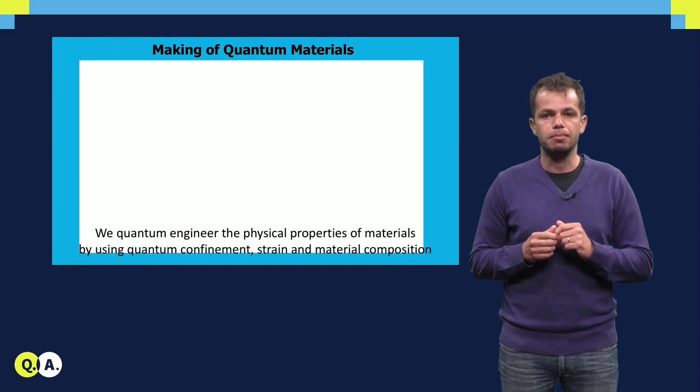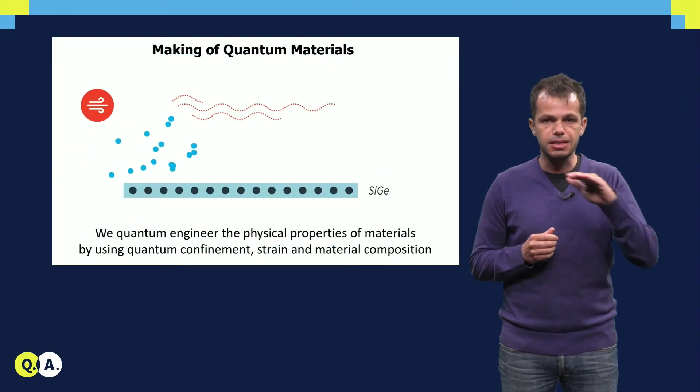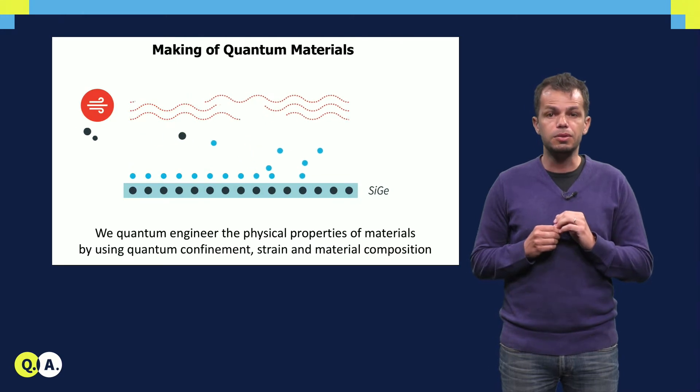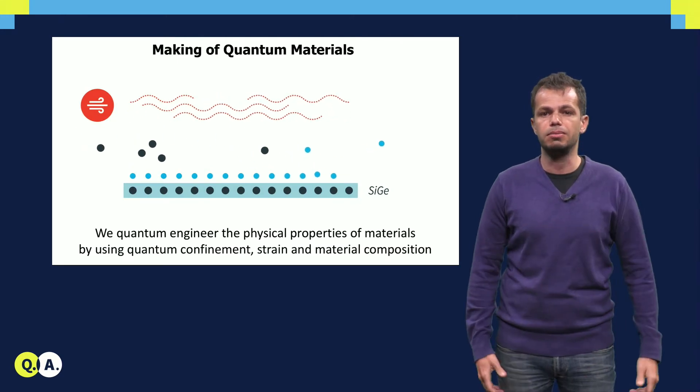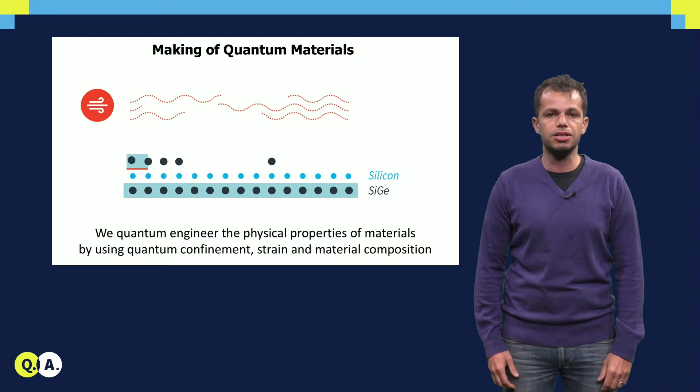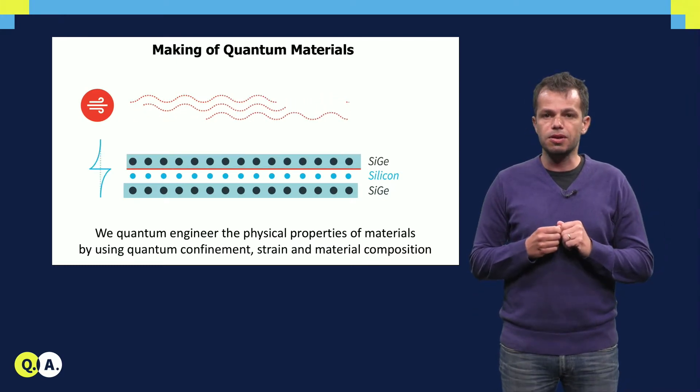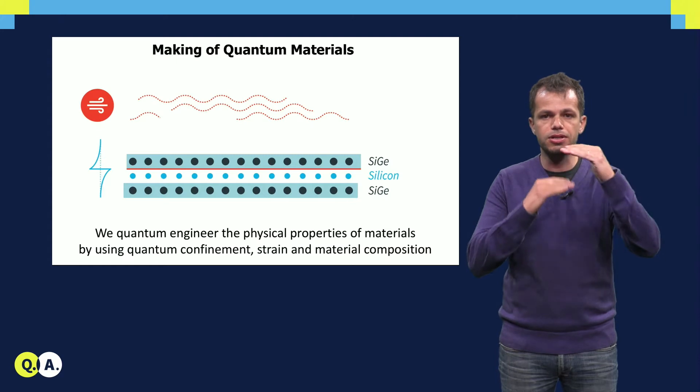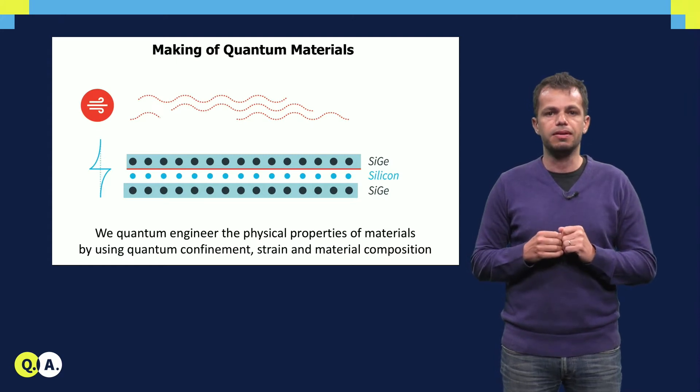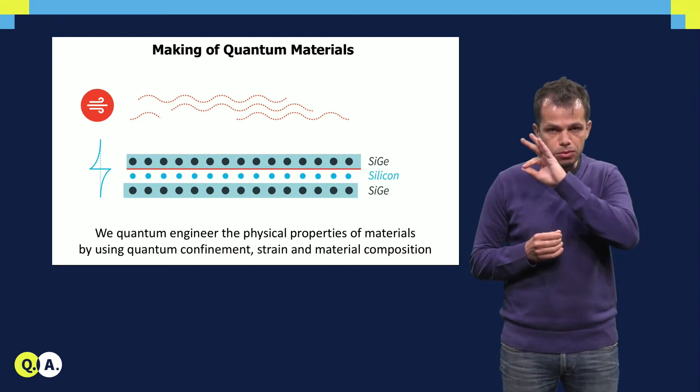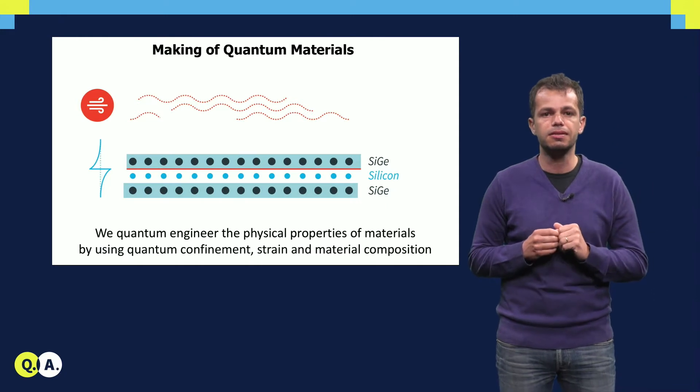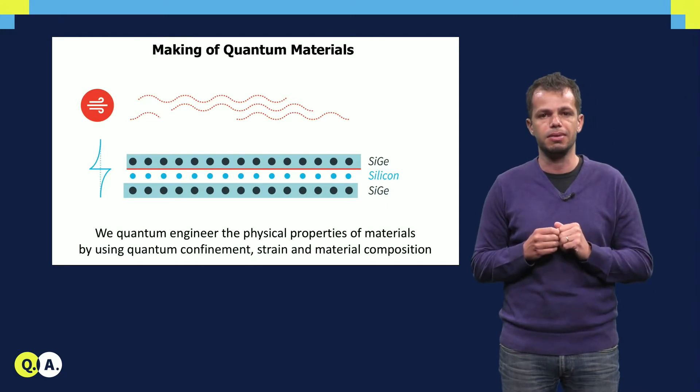For example, by depositing layers of silicon and silicon germanium, we can tune the lattice parameter of silicon to be larger than usual, and match that one of silicon germanium. As a result, the electronic properties of such heterostructure, which is made of different materials, make it possible to form a two-dimensional electron gas at the interface between silicon and silicon germanium.